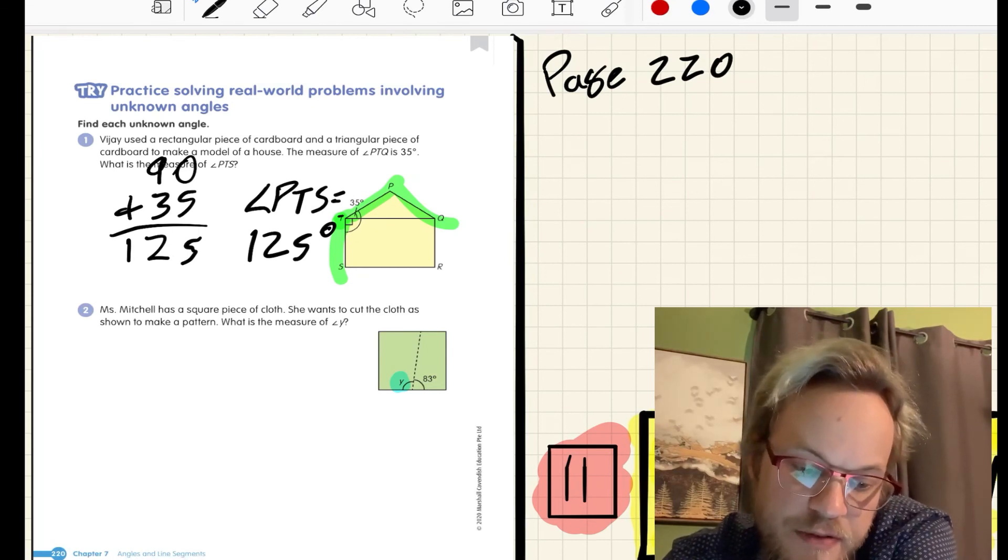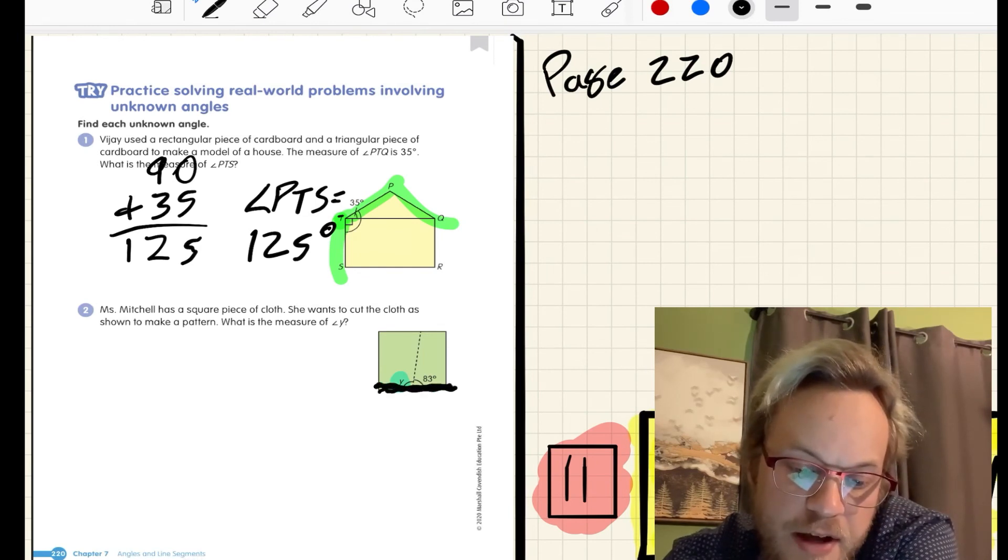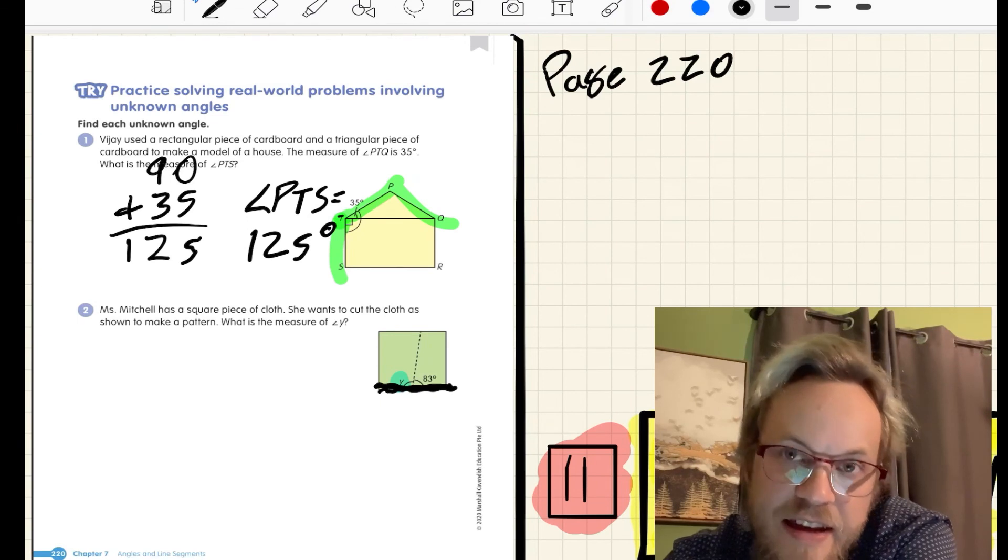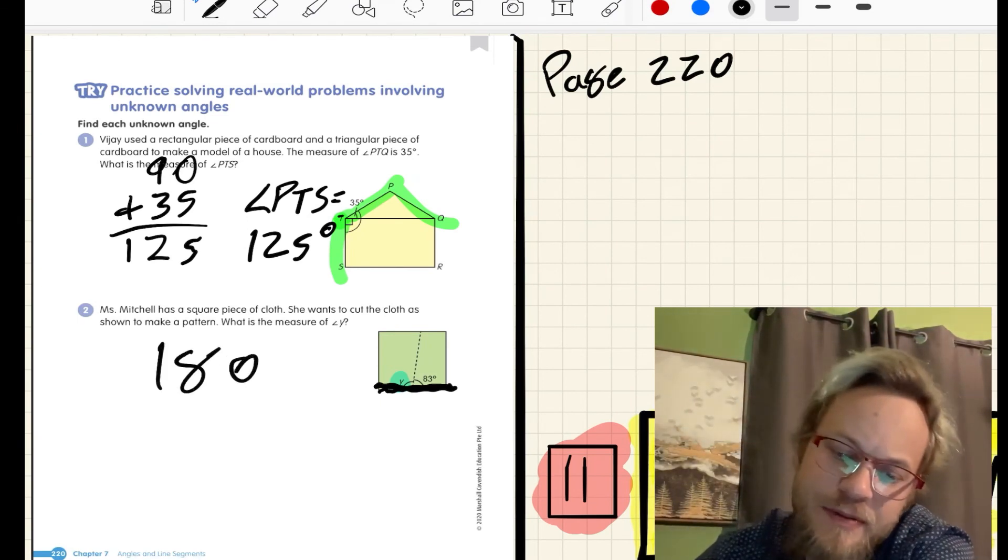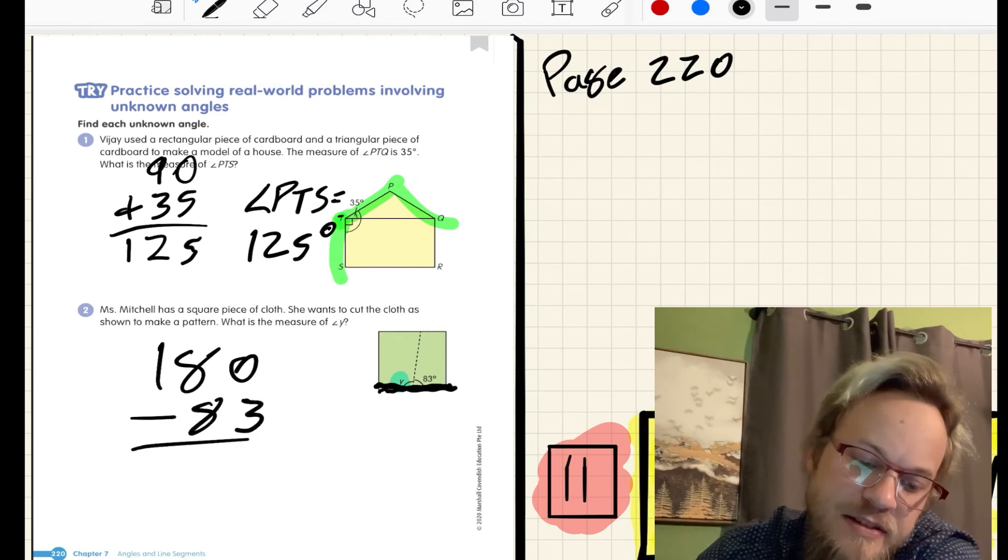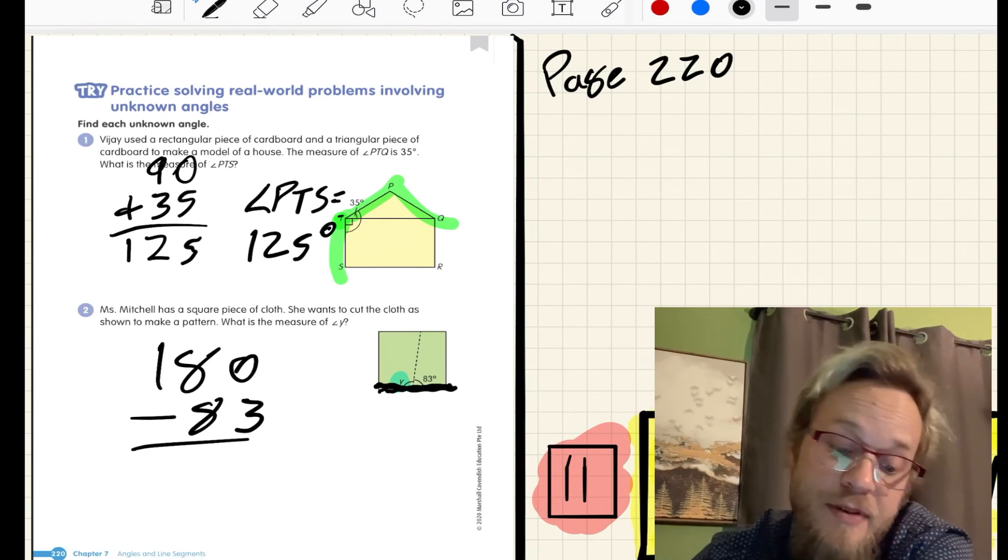Miss Mitchell, folding the cloth, we have 83 degrees here, and we need to figure out what Y is. What it's not telling us is that it's lying on a straight angle, a straight angle of 180 degrees. And now we can subtract that 83 degrees that we do know to find our unknown.